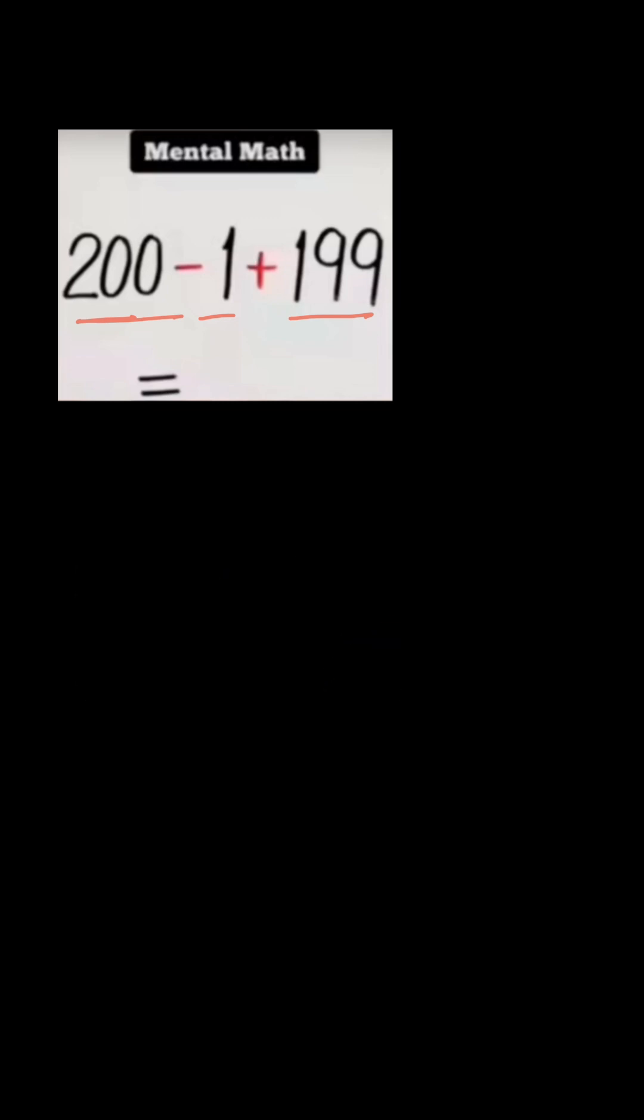Let me show you the reason why. The question is 200 minus 1, so this is a negative number, negative 1. Saying 1 plus 199 is wrong because this is a negative number. You cannot just get rid of the negative sign.